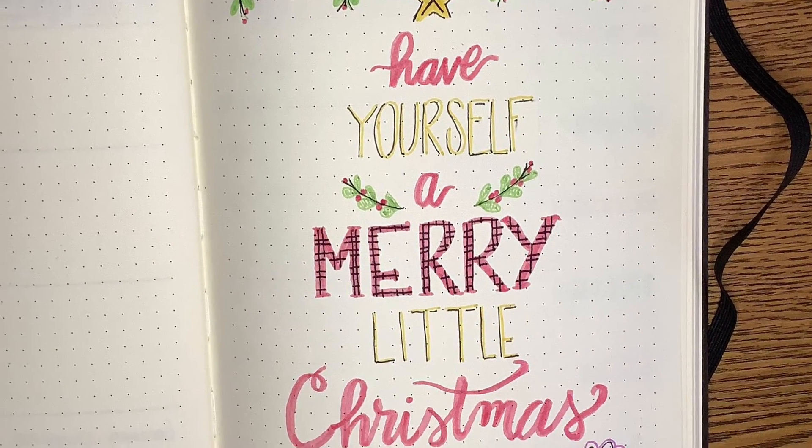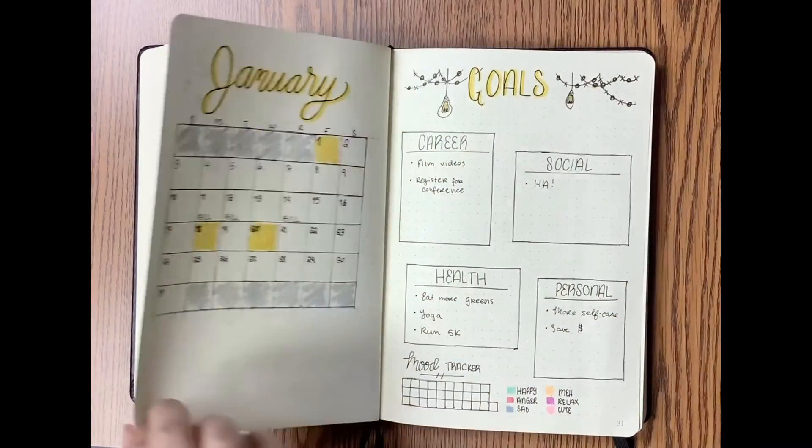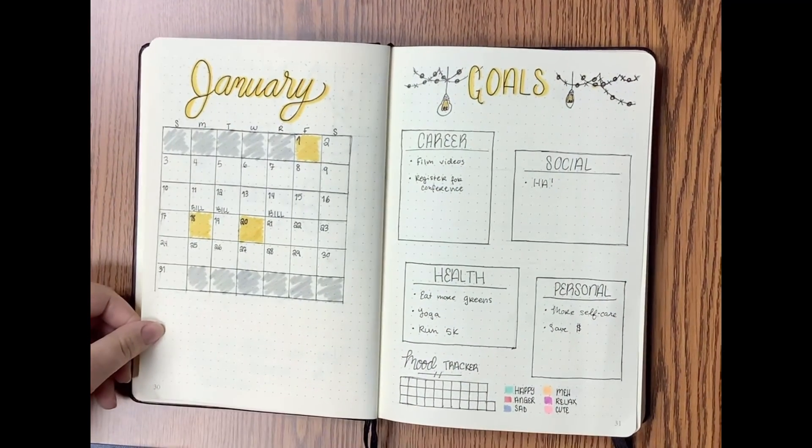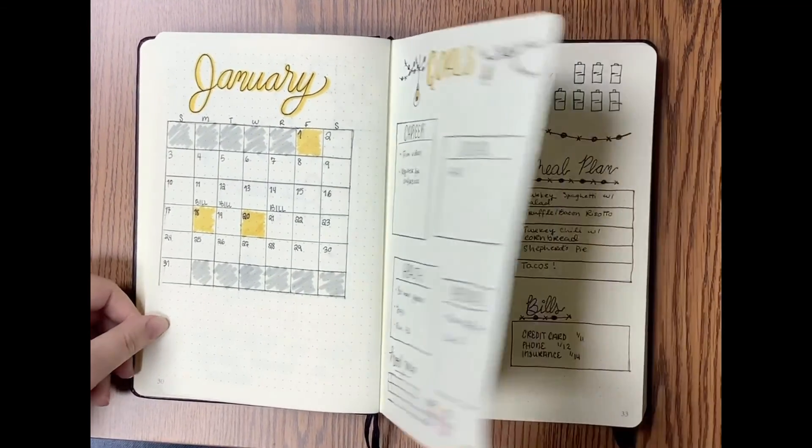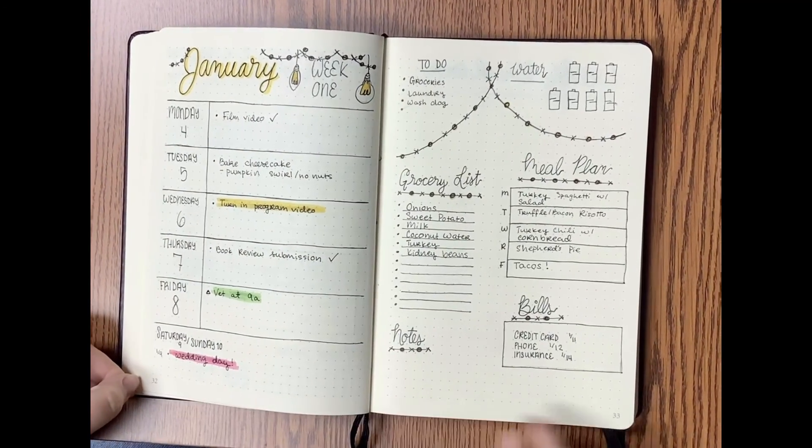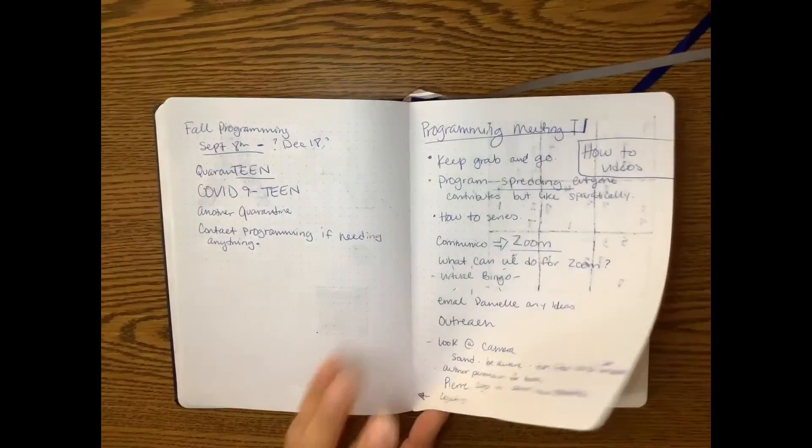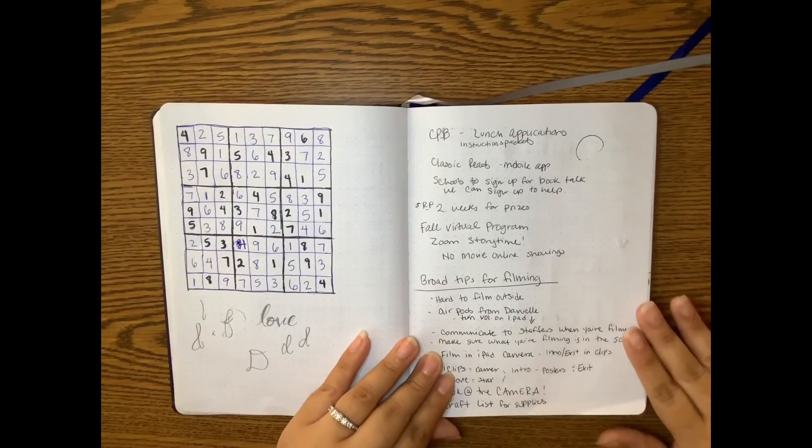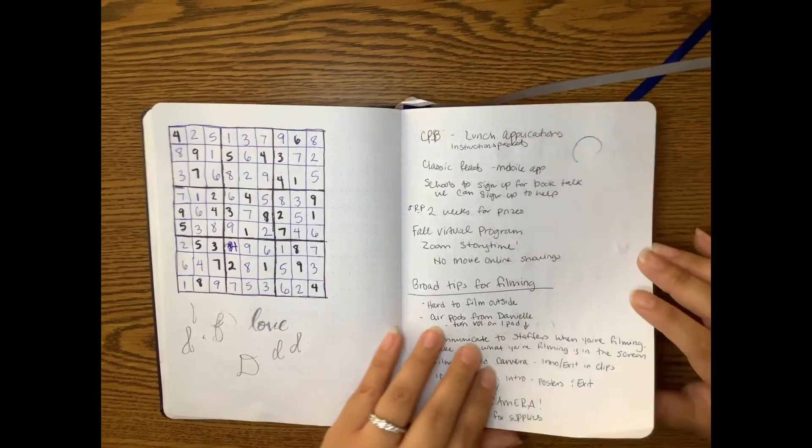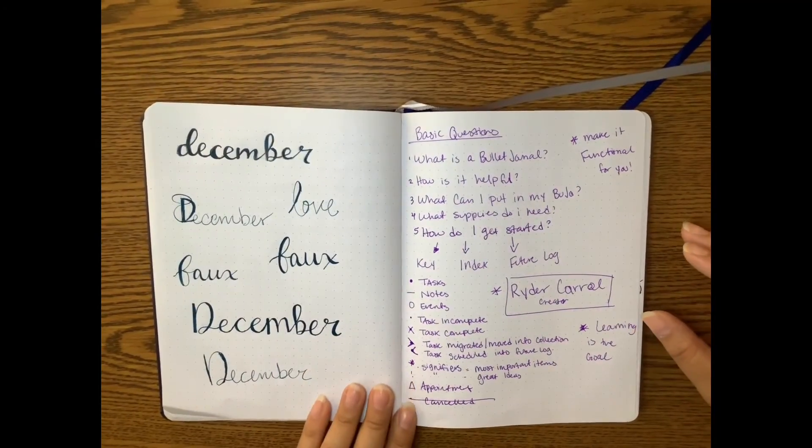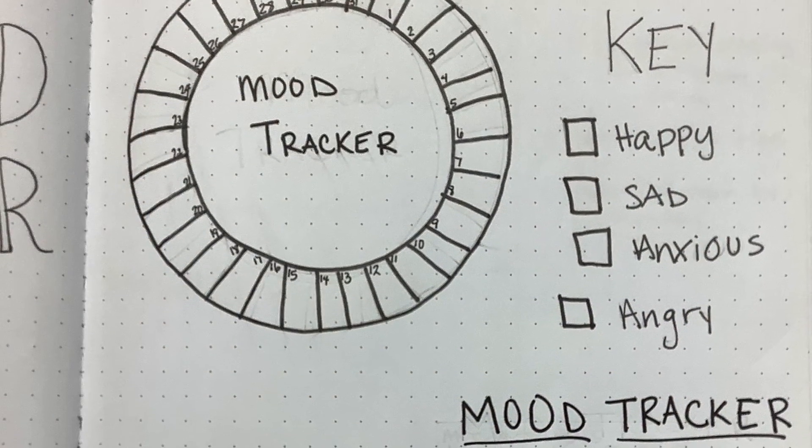And one final piece of advice. Remember to have fun and to do things your way in your journal. Don't compare your journal to those that you see online or even in this video. Your journal is especially unique to you. There is no wrong way to bullet journal. So go out there and make it your own.